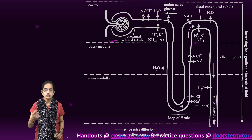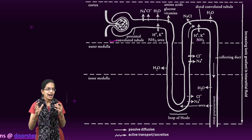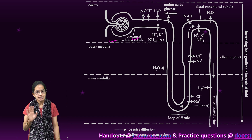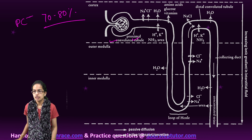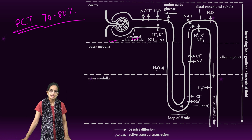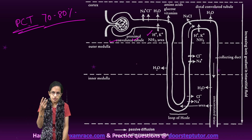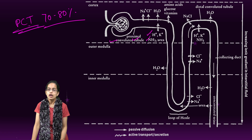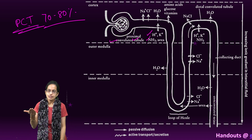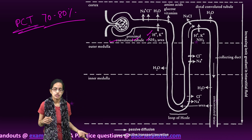The proximal convoluted tubule is composed of simple cuboidal brush border epithelium, which increases the surface area for absorption. Nearly 70 to 80% of electrolytes and water are reabsorbed in the PCT itself. It also helps maintain pH and ionic balance by secreting hydrogen ions, ammonia, and potassium into the filtrate. The brush border epithelium increases surface area for reabsorption.